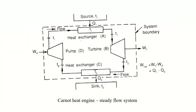The same idea applies to a flow system. You can consider a boiler (heat addition), a turbine (work output), a condenser (heat rejection), and a pump (work input). Each process — heat addition, expansion, condensation, and pumping — must be carried out reversibly.